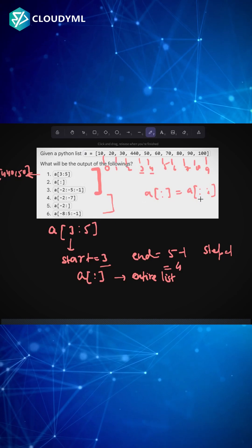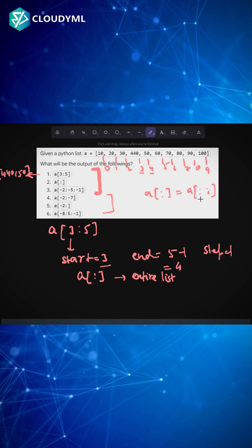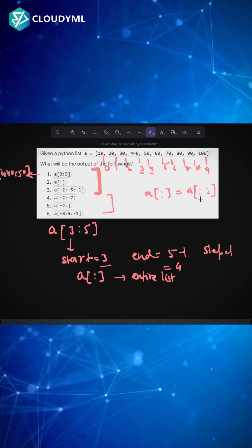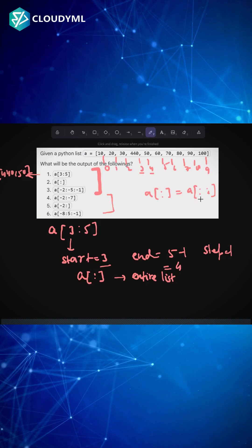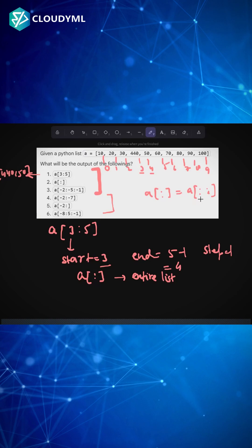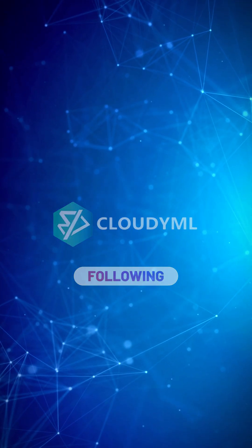The third part is a[-2:-5:-1]. For this part, we will discuss in the next video what is the start, what is the end, and how to tackle this step. Wait for the next part. Till then, have a great day. Thank you. Follow CloudyML for day 13.